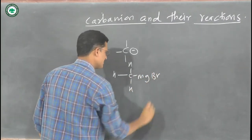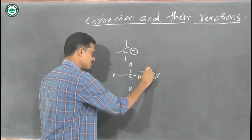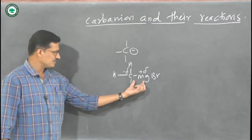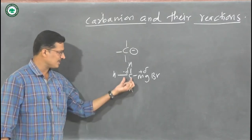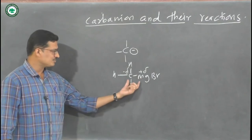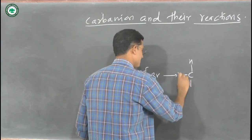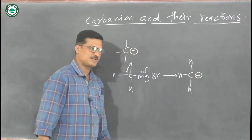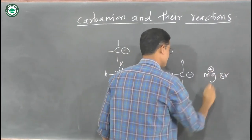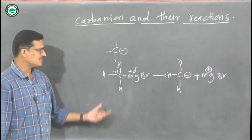As a simple example, take the Grignard reagent — methyl magnesium bromide. In this compound, carbon is electronegative and magnesium is electropositive, so there is an electronegativity difference. When the bond between carbon and magnesium breaks, there is formation of a carbon with a negative charge — a carbanion. In this way we generate a carbanion.